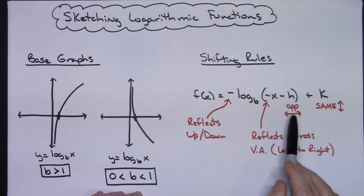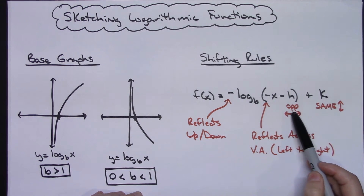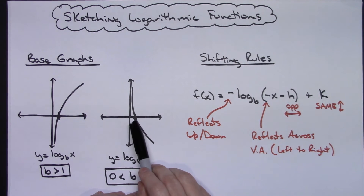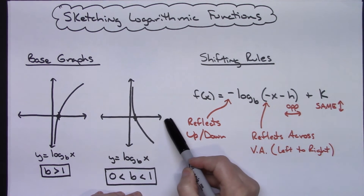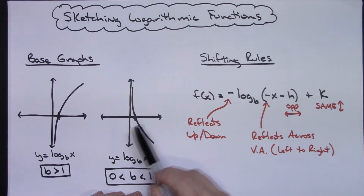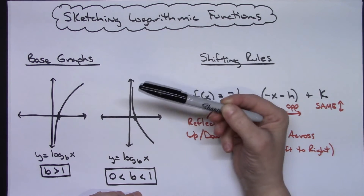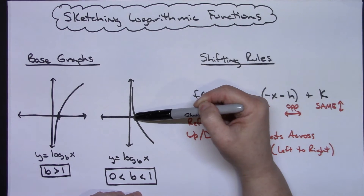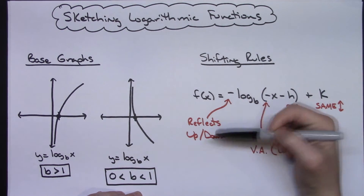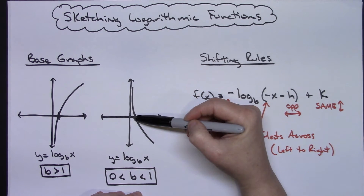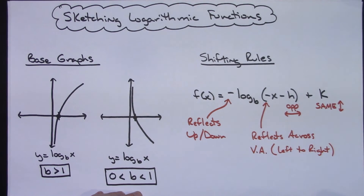In reference to this shifting, the point I'm going to be shifting is the point that goes through (1, 0) on both of those base graphs. The vertical asymptote is always 1 unit to the left of that point. So when I shift that point in the examples, I'm also going to shift the vertical asymptote, keeping it exactly 1 to the left.